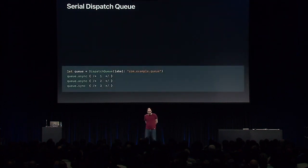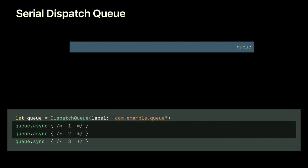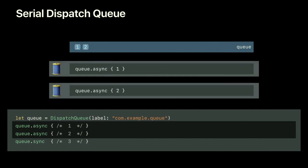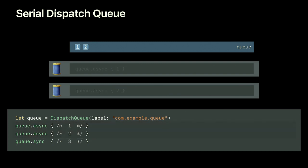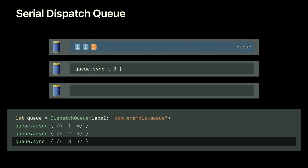Here we create a serial queue by calling the dispatch queue constructor, giving a piece of memory that is inert until used. Two threads can call queue.async to submit asynchronous work — it's fine for multiple threads to do this; items get enqueued in order. When the first thread calls queue.sync, it enqueues a placeholder so the thread can wait until its turn. An automatic worker thread executes the asynchronous work items until reaching that placeholder, at which point ownership transfers to the thread waiting in queue.sync so it can execute its block.